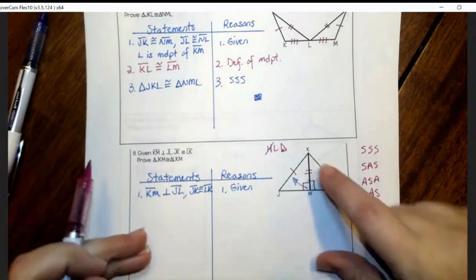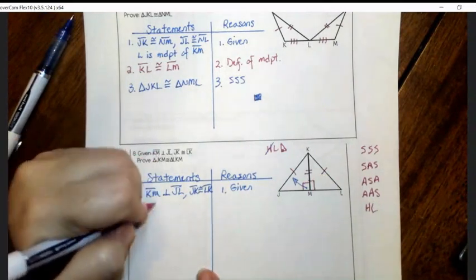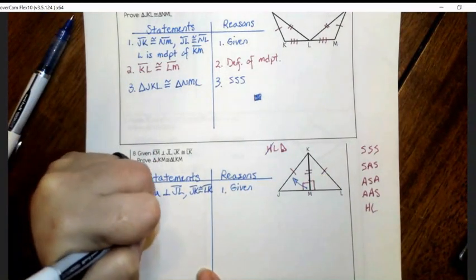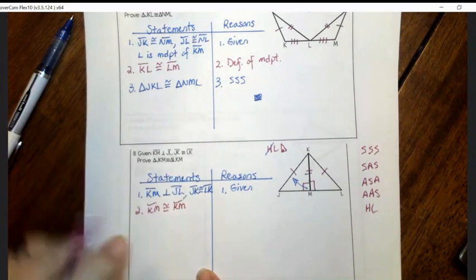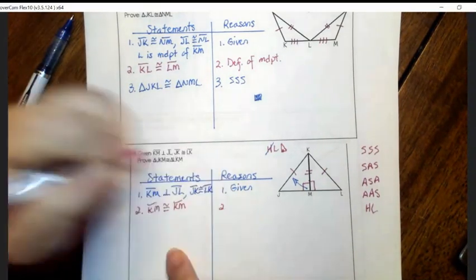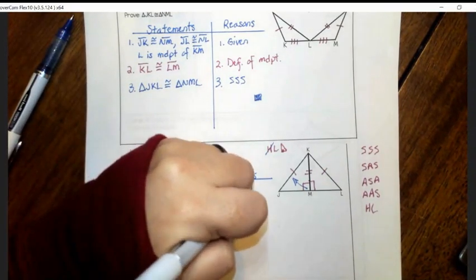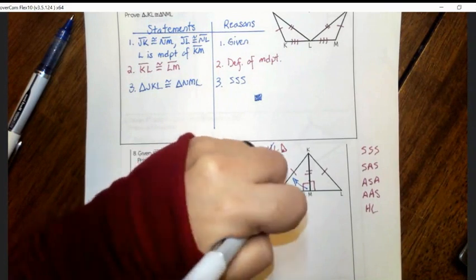So now the way I knew that the other side was congruent was with the reflexive property. So you have to say outright, KM is congruent to KM. It's like looking in a mirror. There's the same thing on both sides of that congruent side. So this is the reflexive property.